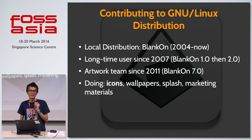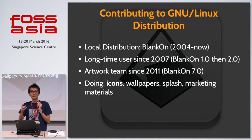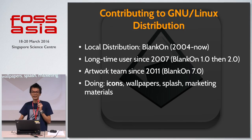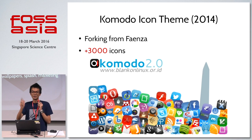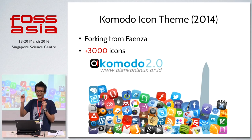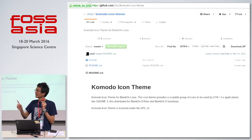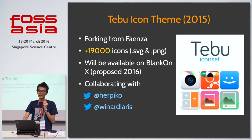The first part is contributing to a local distribution. The easiest one is contributing to a local community and then to upstream. In Indonesia, there is a local distribution named BlankOn. I joined an artwork team. Most of my activities involve icons. I created a Komodo icon set, and we also hosted it on GitHub.